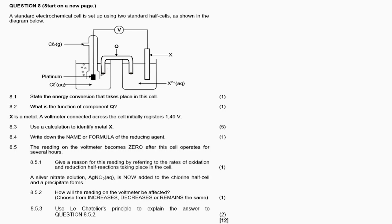In this video, we'll discuss Question 8 from the November 2019 question paper. It's about electrochemistry, specifically the galvanic cell or voltaic cell.